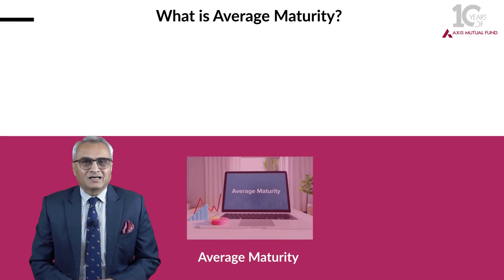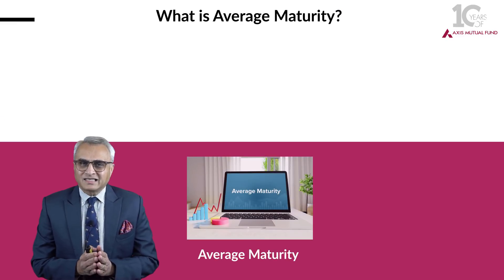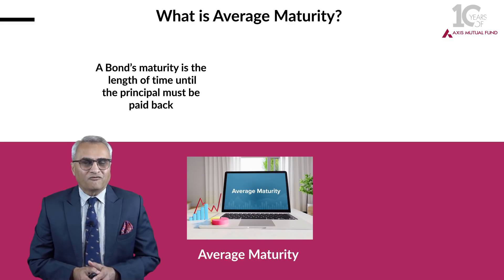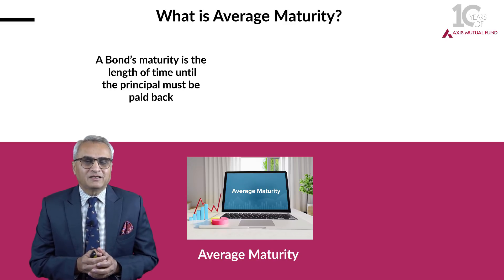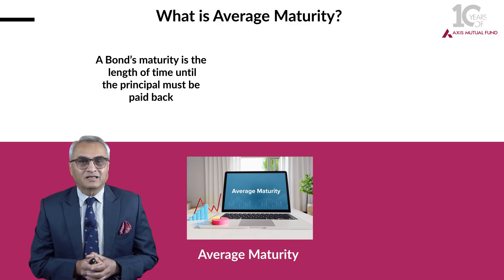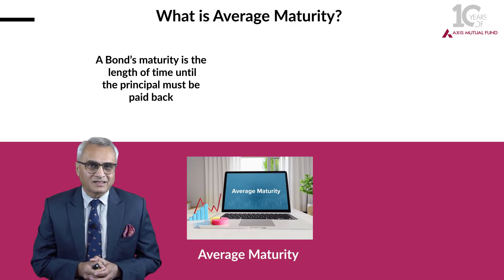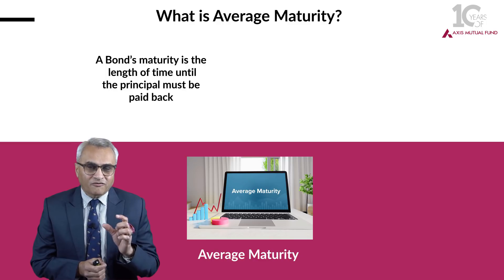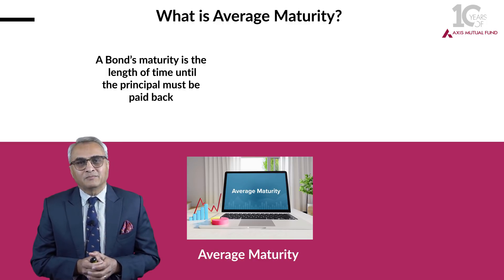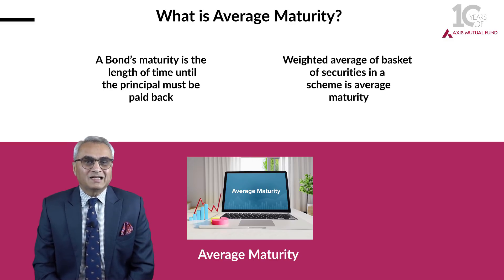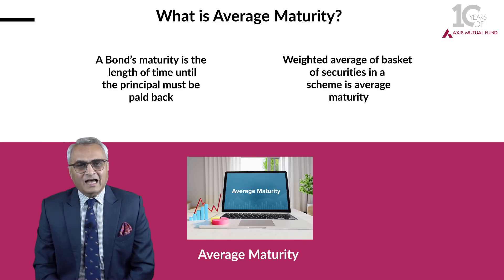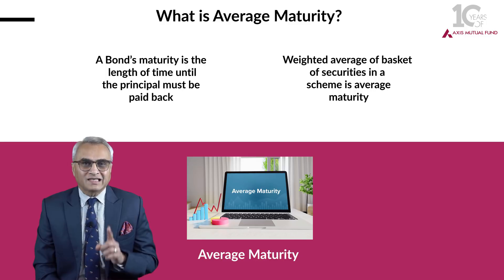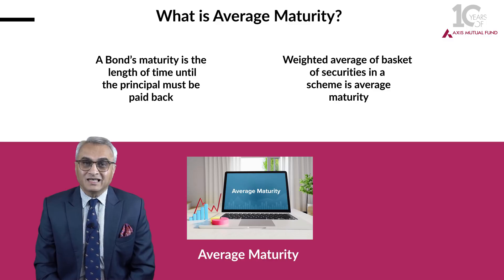What is average maturity? All debt securities are issued with a fixed tenor of 1 year, 3 years, 5 years, or 10 years. This is the period by which investors must receive their money back as far as the principal is concerned, and that becomes the maturity of one particular security issued by a borrower. Most mutual funds invest in a basket of securities, not a single issue. The weighted average of all these securities in a basket becomes the average maturity for investors.